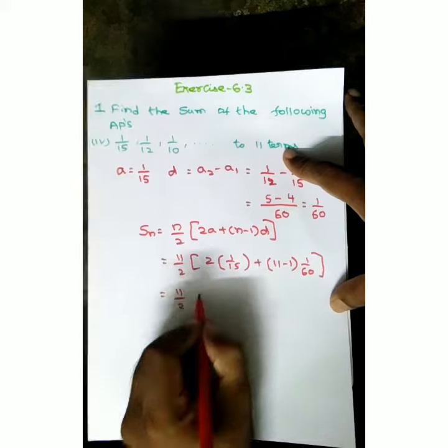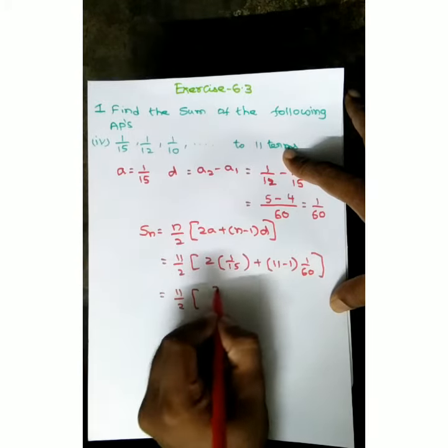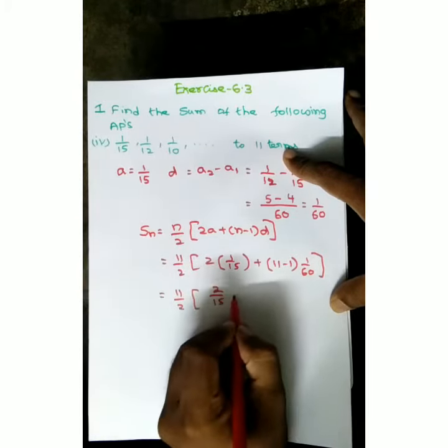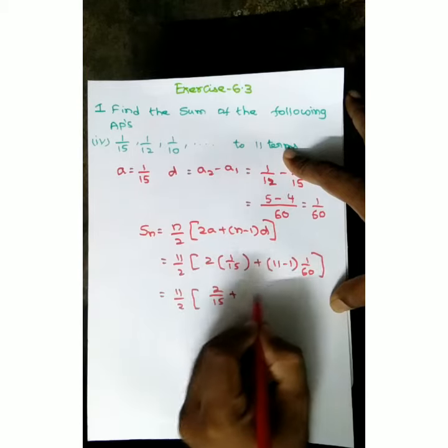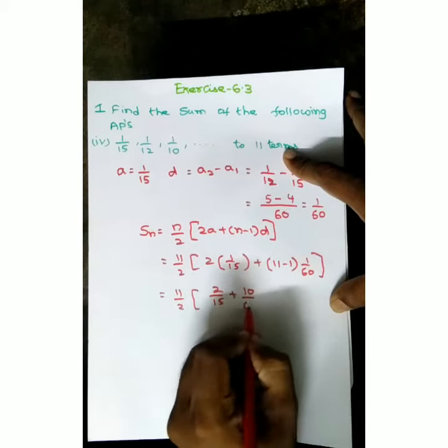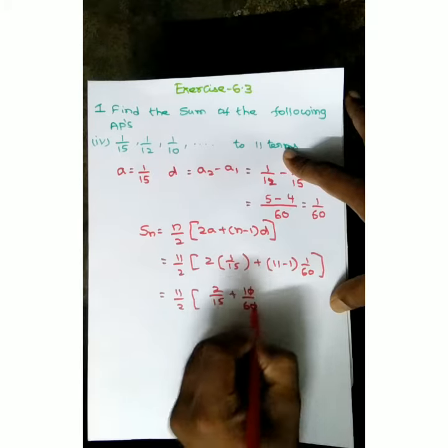11 by 2, cancel the 2s: 2 by 15 plus 11 minus 1 is 10, 10 by 60. Cancel the zeros.